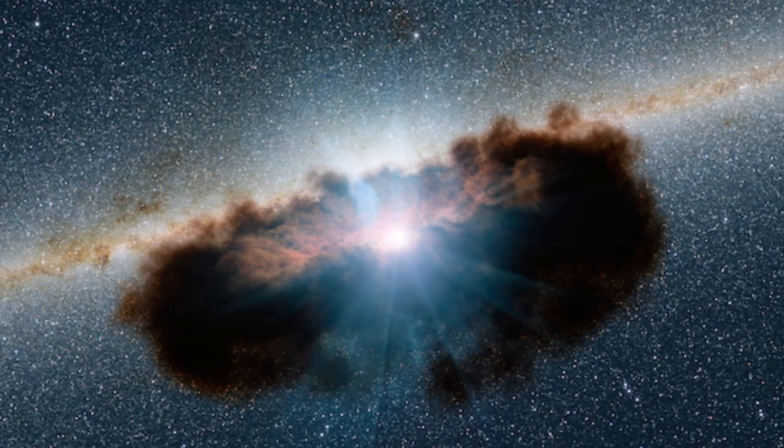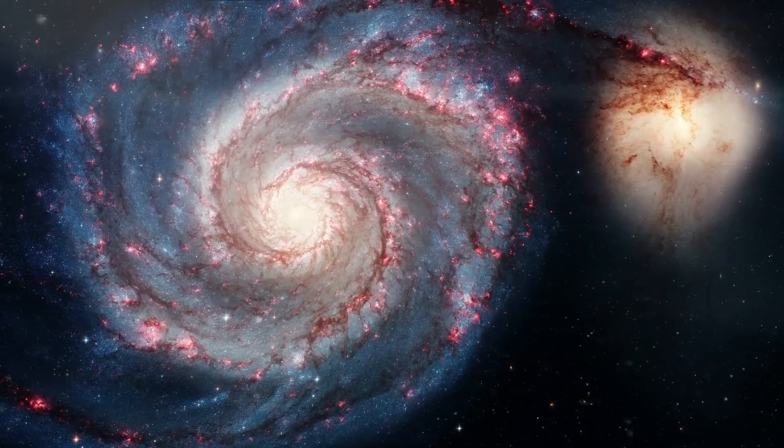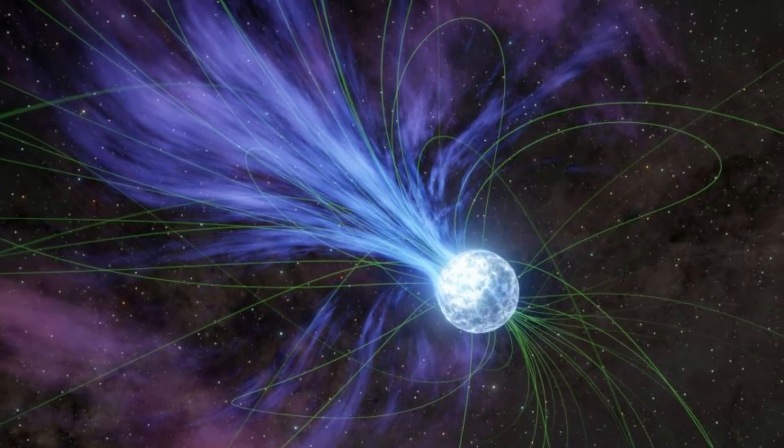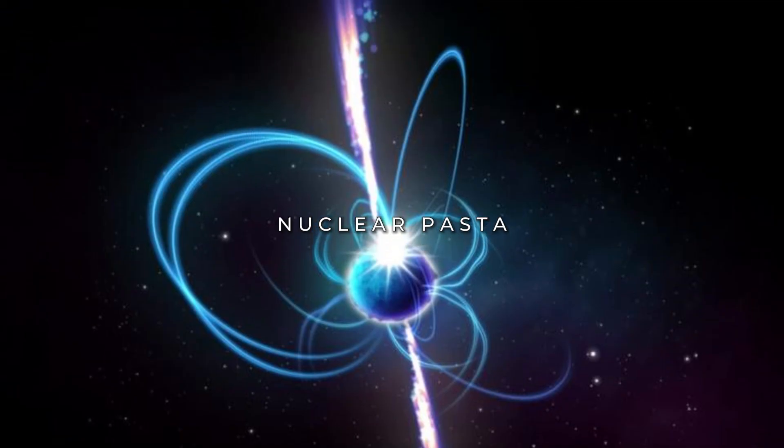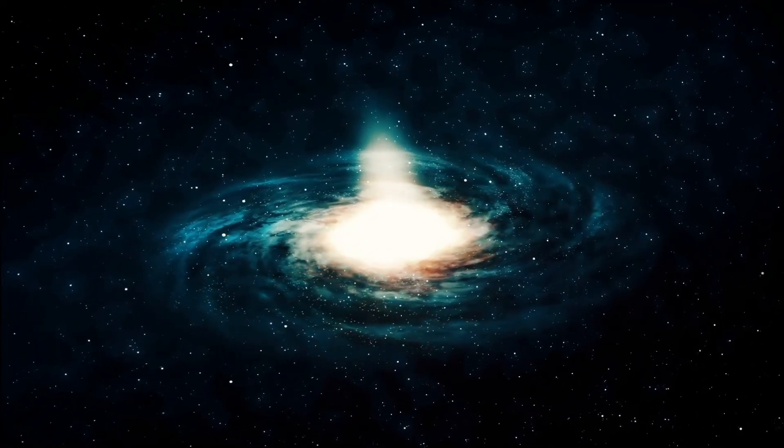As we go deeper, gravity crushes nuclei together, turning protons into neutrons. We hit the base of the crust, where nuclei are jammed so tight they start touching, forming what physicists amusingly call nuclear pasta. Think spaghetti and lasagna, but made of nuclei.